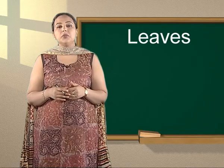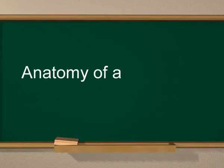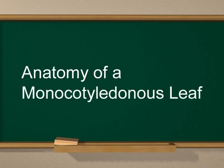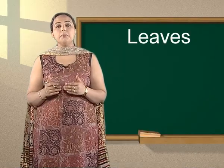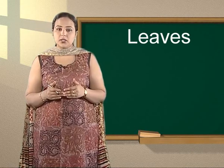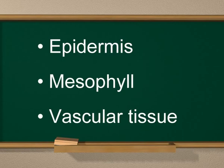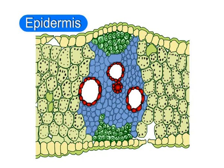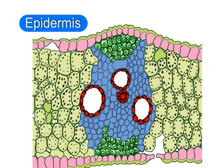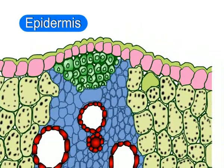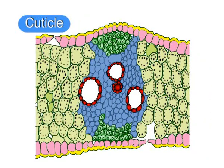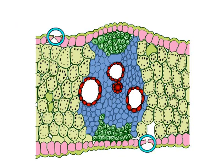Anatomy of a monocotyledonous or isobilateral leaf: A transverse section passing through the midrib region of an isobilateral leaf shows epidermis, mesophyll and vascular tissues. Epidermis forms two layers, one on each surface. Both epidermal layers are composed of compactly arranged cells. The outer walls of the epidermal cells are coated with a thin or thick cuticle. The number of stomata on both the epidermal layers is almost equal.